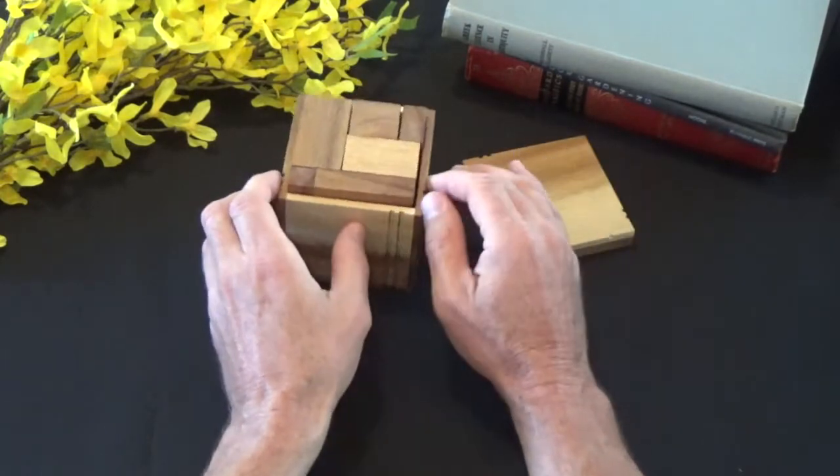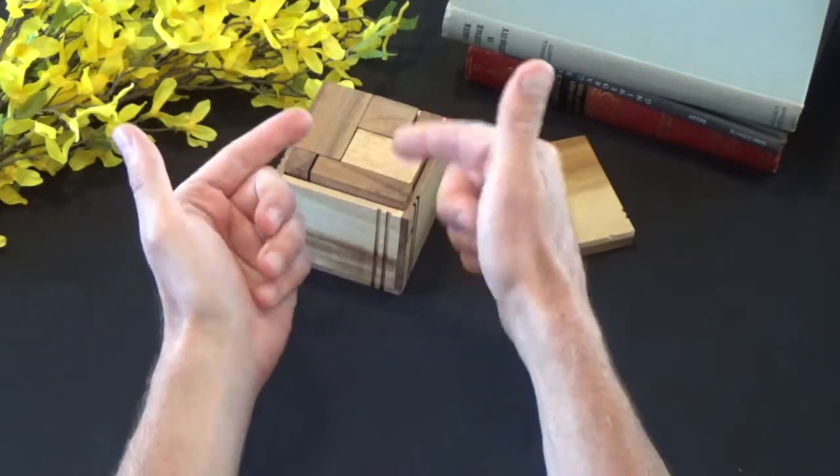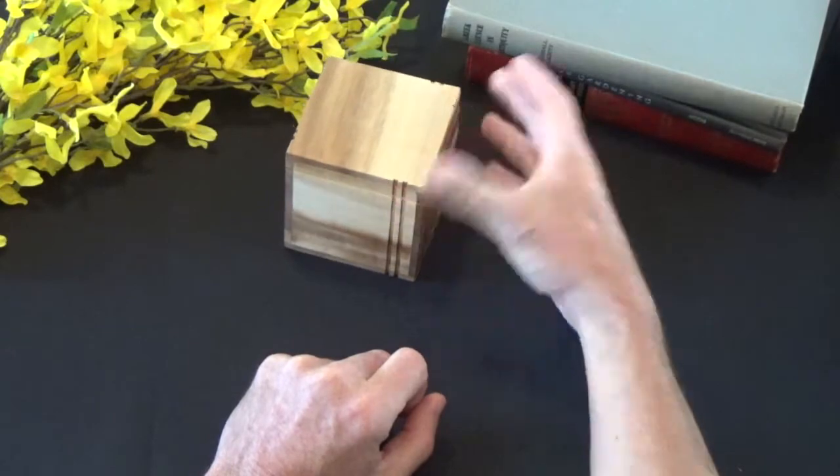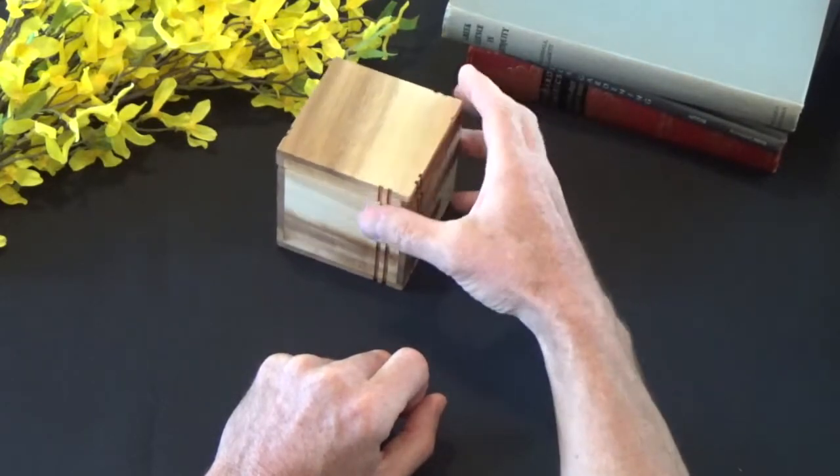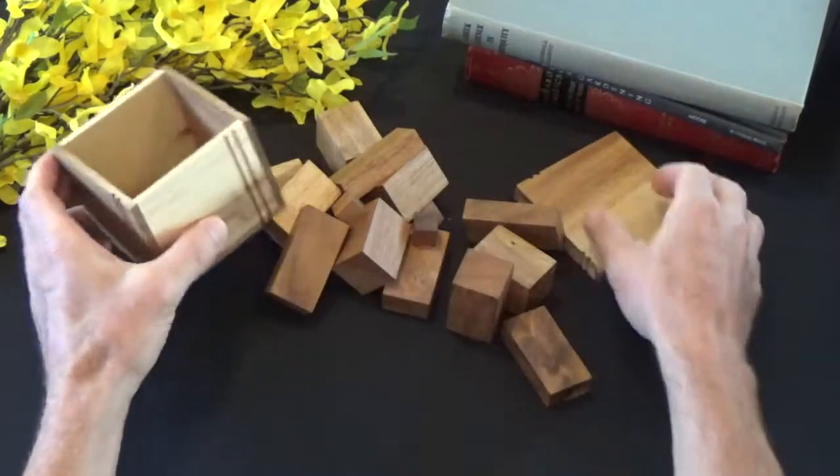What you have here are 17 pieces that need to be packed into this box like you see here so the lid will go on. Well seems like it should be simple enough, but when you dump these pieces out you'll see what we're dealing with.